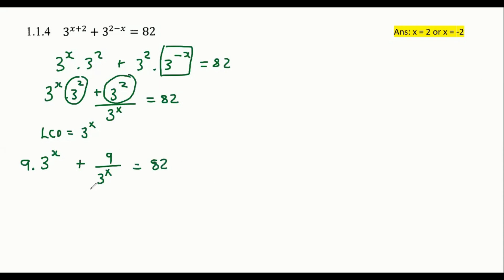I'm then going to multiply my LCD across so that I can get rid of my fraction. And so we're going to end up with nine times by three to the power of X times by three to the power of X plus nine equals to 82 times by three to the power of X. I'm then going to combine these two over here because they have the same base. I can add their exponents.